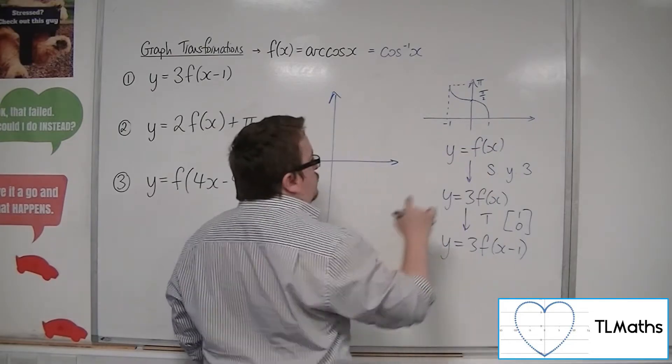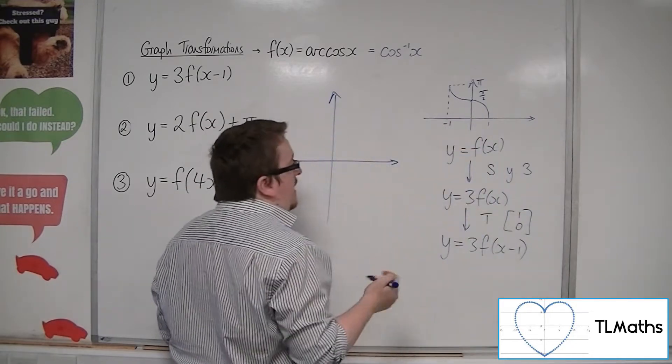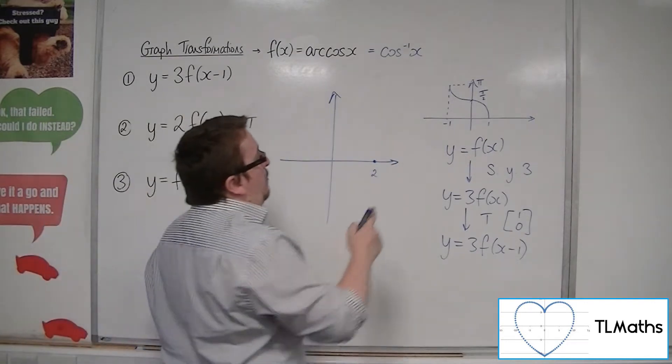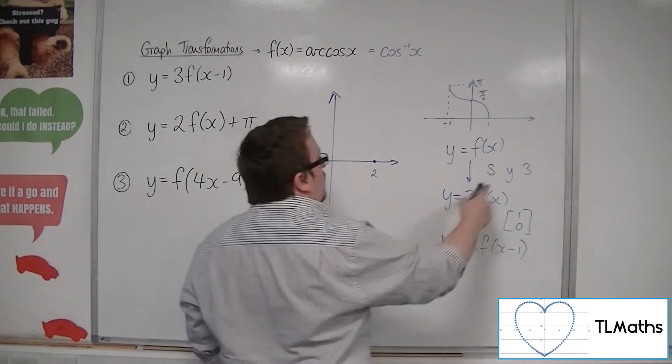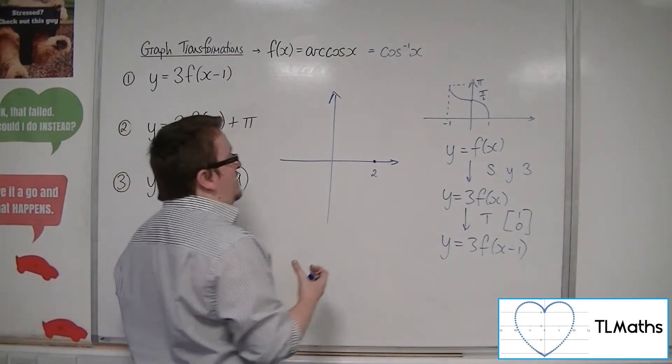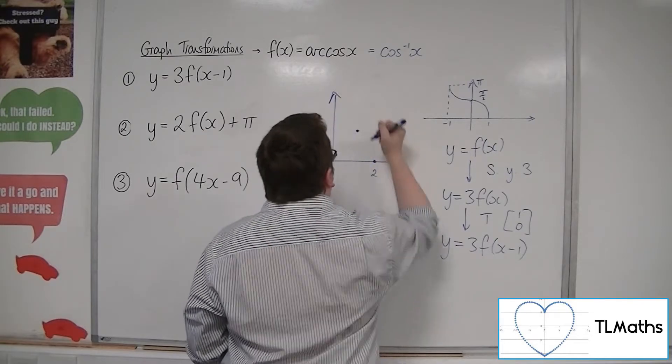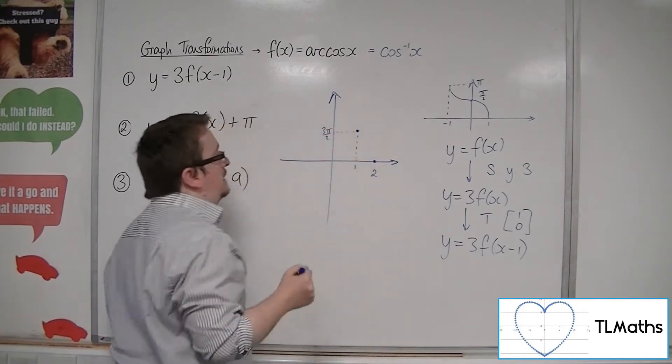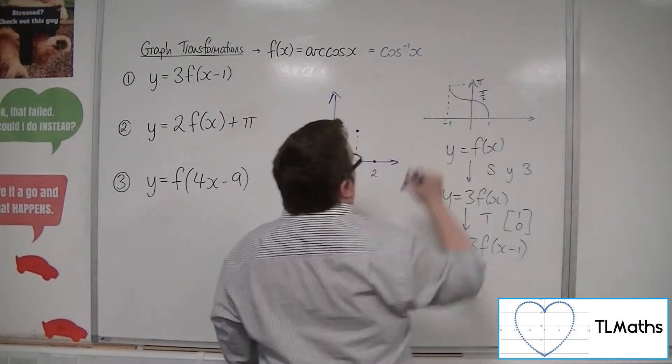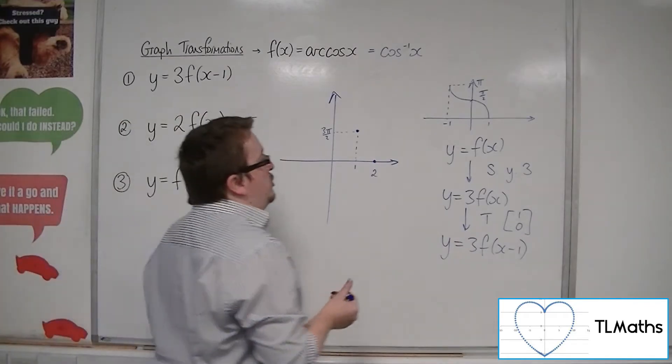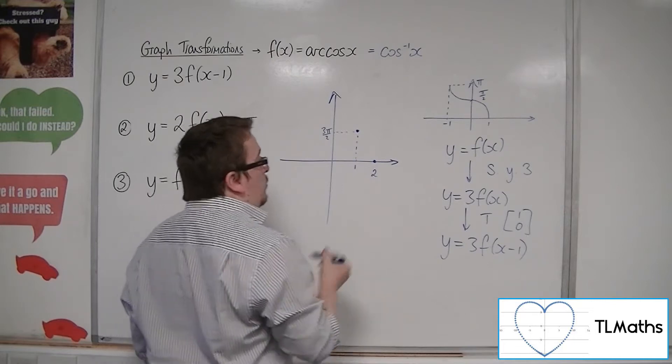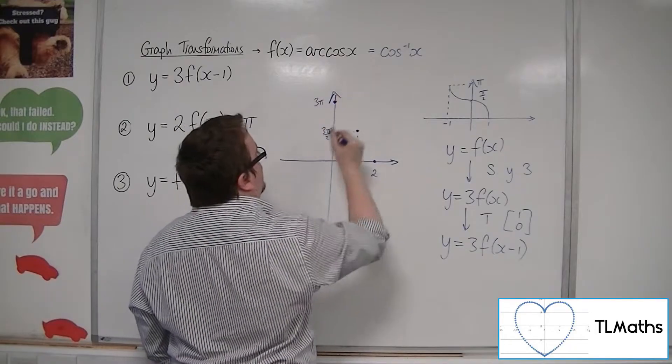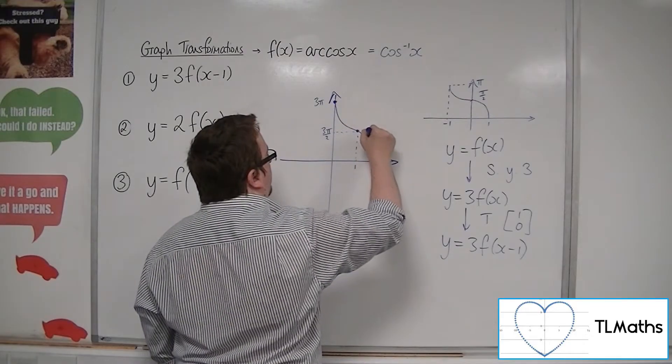So 1, 0 over here, stretch scale factor 3 so it stays where it is, but it gets translated 1 to the right. So it's getting translated over here to 2, 0. This point here, 0 pi over 2, will get stretched to 3 pi over 2 and then translated 1. So we're going to have this point here at 1, 3 pi over 2. Then we've got this third important point, the minus 1 pi, stretched so that it's at minus 1, 3 pi, and then translated 1 to the right. And so that would put it up here at 0, 3 pi. And so the curve would look something like that.